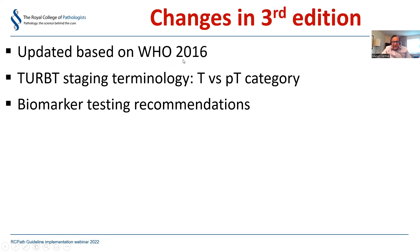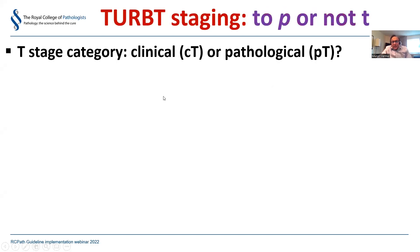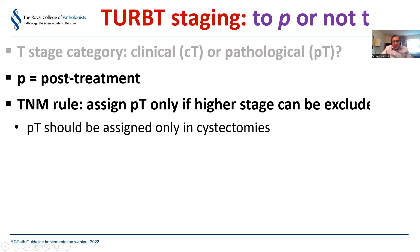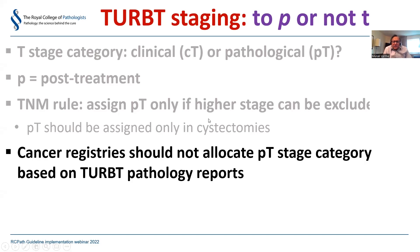One of the main changes was staging of TURBT specimens. The question is: to 'p' or not to 'p' - should the T category be a clinical stage cT or a pathological stage pT? The TNM rules state that 'p' means post-treatment, and TURBT is not treatment. Therefore, pT stage should be assigned only if the higher stage can be excluded, which essentially means only in cystectomy specimens with very rare exceptions.